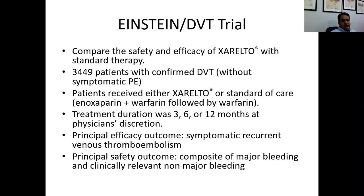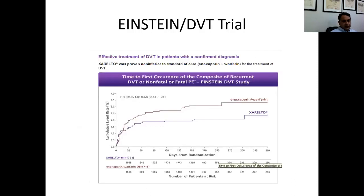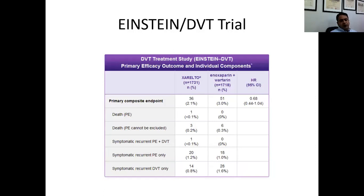The EINSTEIN DVT trial compared the safety and efficacy of rivaroxaban with standard therapy. It enrolled 3,400 patients with confirmed DVT with or without symptomatic pulmonary embolism. Patients received either Xarelto or standard care — enoxaparin bridge plus warfarin, followed by warfarin — for 3, 6, or 12 months at the physician's discretion. The principal efficacy outcome was symptomatic recurrent VTE. After one year, the primary composite endpoint occurred in only 2.1% (36 events) in the 1,700 rivaroxaban patients versus 3.0% (51 events) in the enoxaparin/warfarin group.